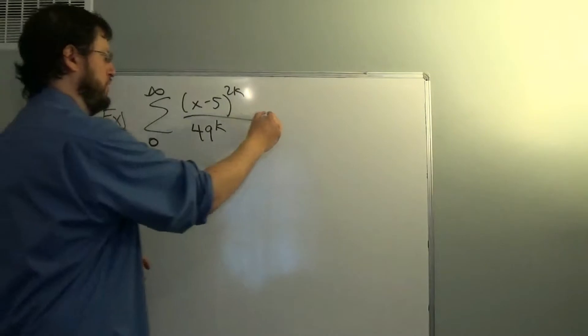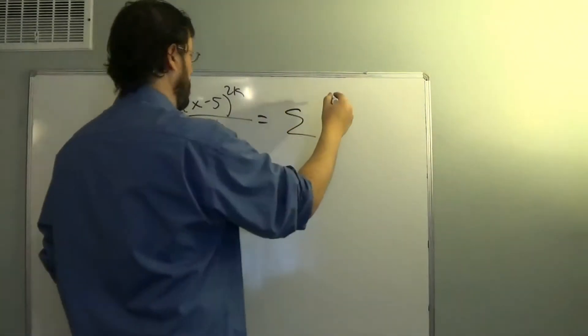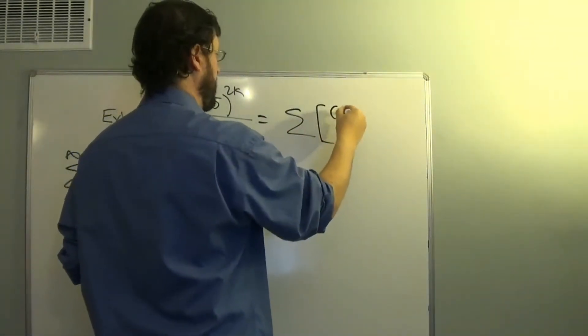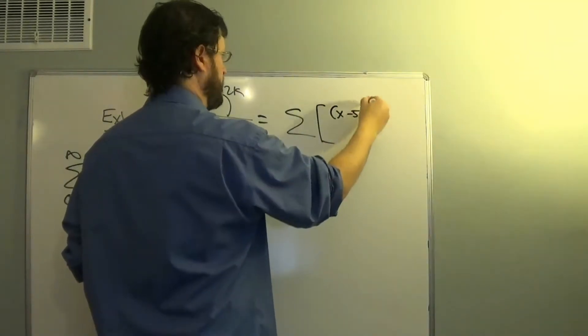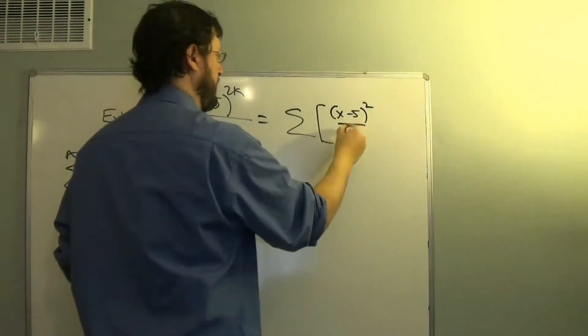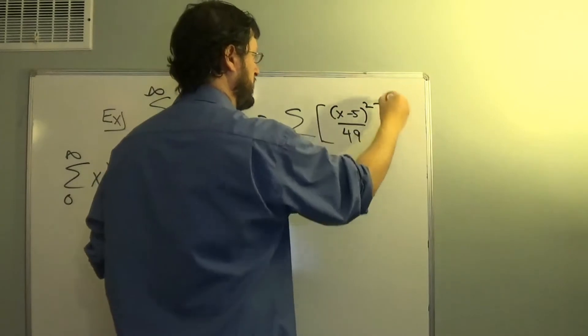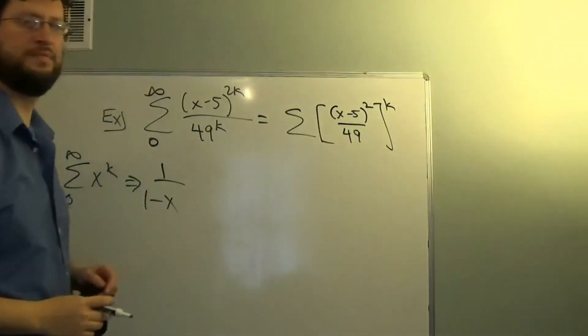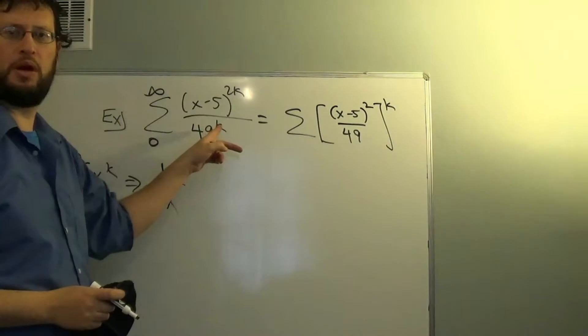So what I'm going to do is do some algebra, write that as x minus 5 squared over 49 all to the k. If you distribute the exponent, we get back to what we wanted.